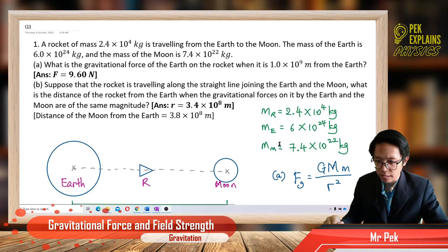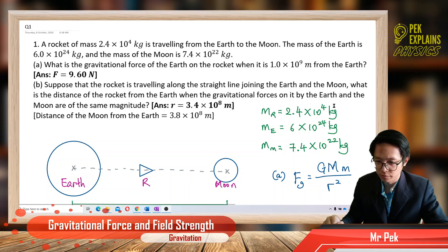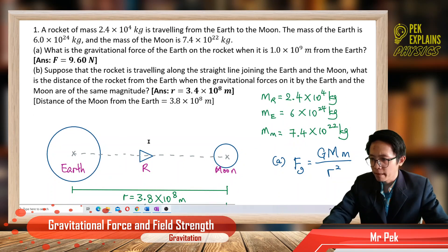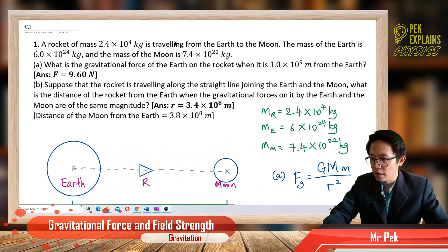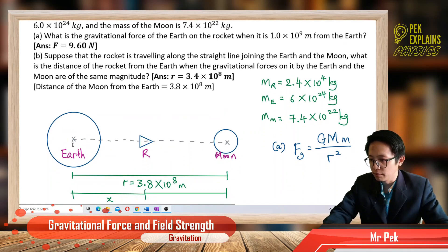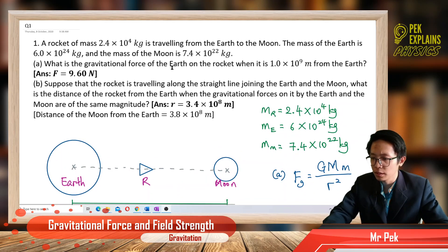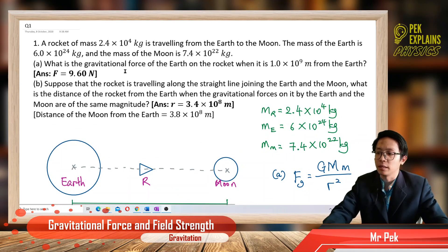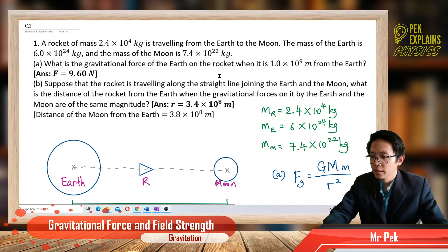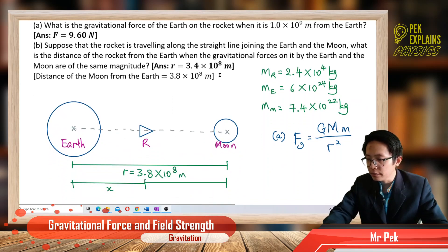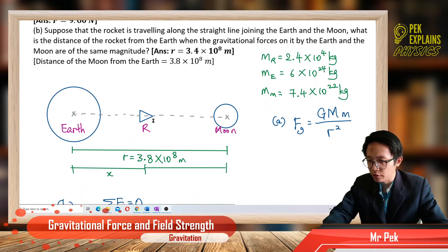All this information I already summarized here. We have the mass of the rocket, the mass of the Earth, and also the mass of the Moon. Now, the rocket is traveling from Earth to Moon. What is the force between Earth and rocket? That is the force of Earth on rocket.